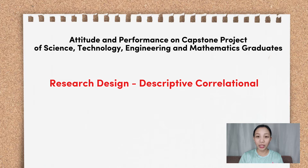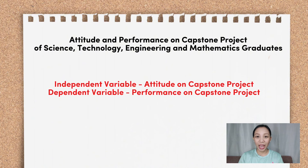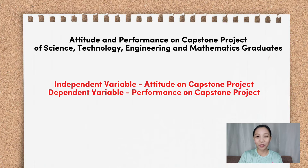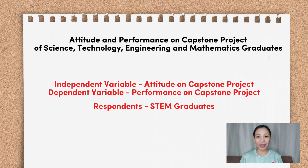Because of the use of the signal word AND. In this research title, the independent variable is Attitudes and the dependent variable is Performance on Capstone Project. So who will be our respondents? The Science, Technology, Engineering, and Mathematics graduates, because they have already finished their Capstone Project.